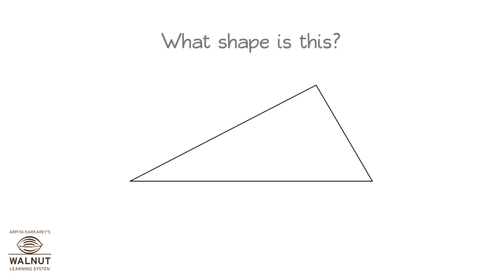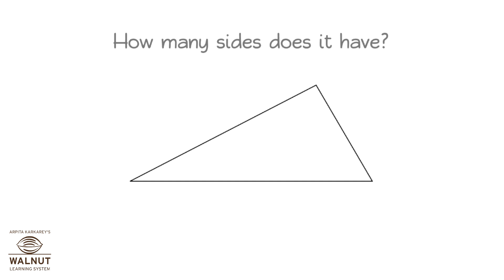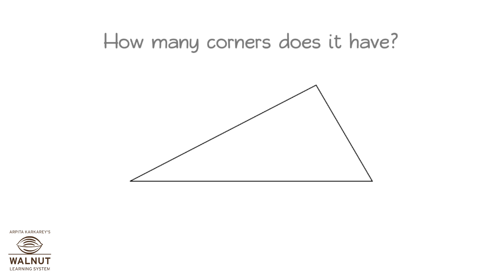What shape is this? Triangle. How many sides does it have? Three. How many corners does it have? Three.